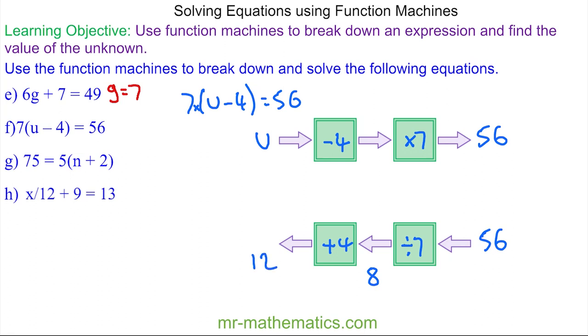56 divided by 7 is 8, and 8 + 4 = 12. Let's check it works: if 12 goes in, we take away 4 to get 8, then 8 multiplied by 7 is 56 — so we know u = 12.